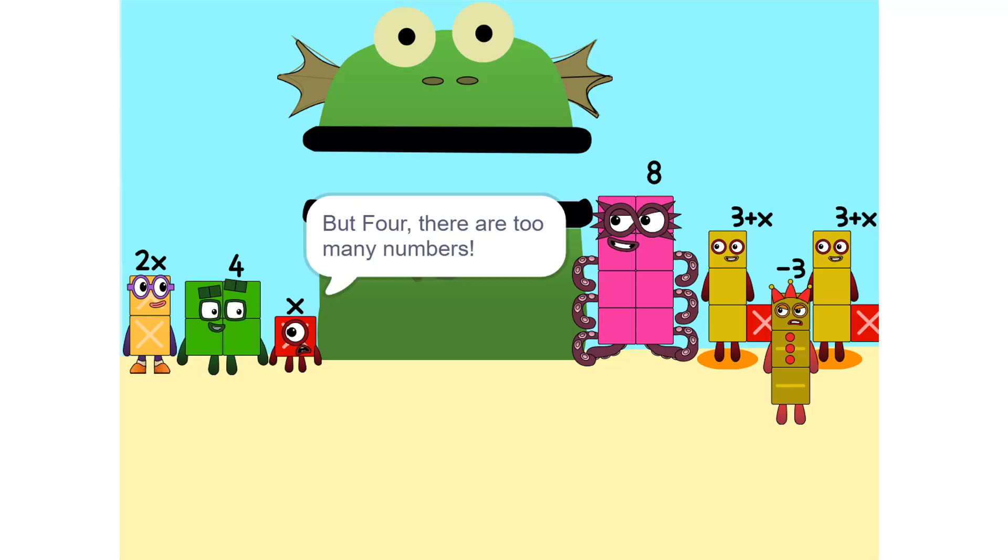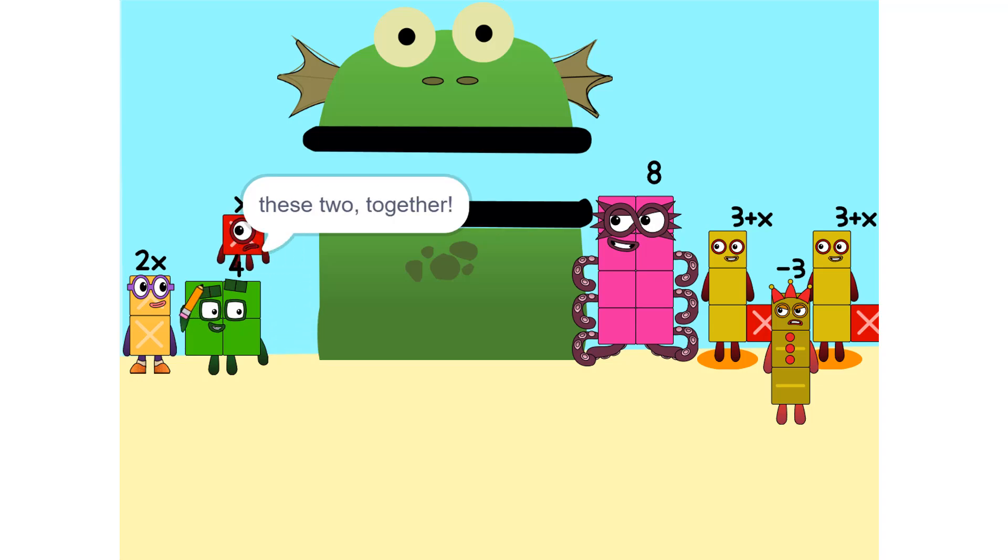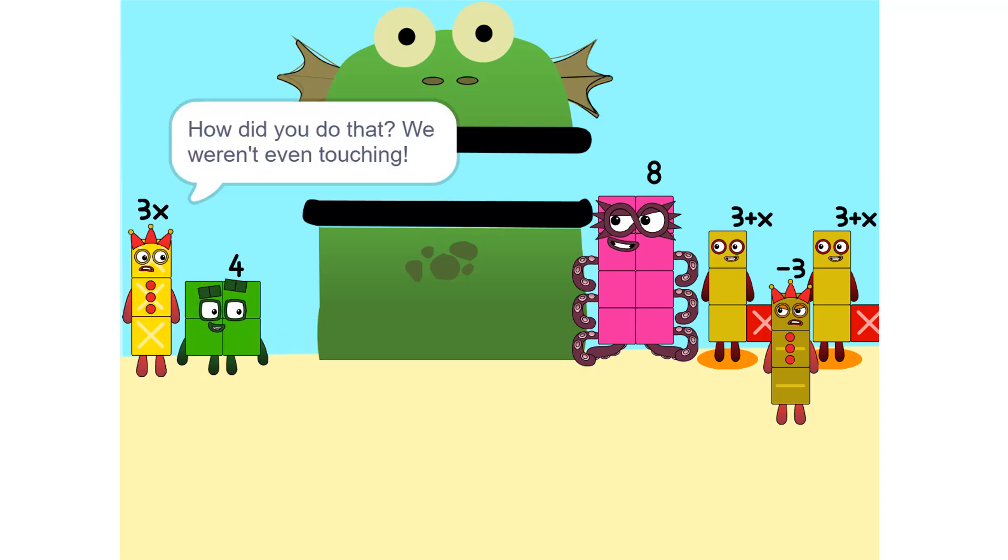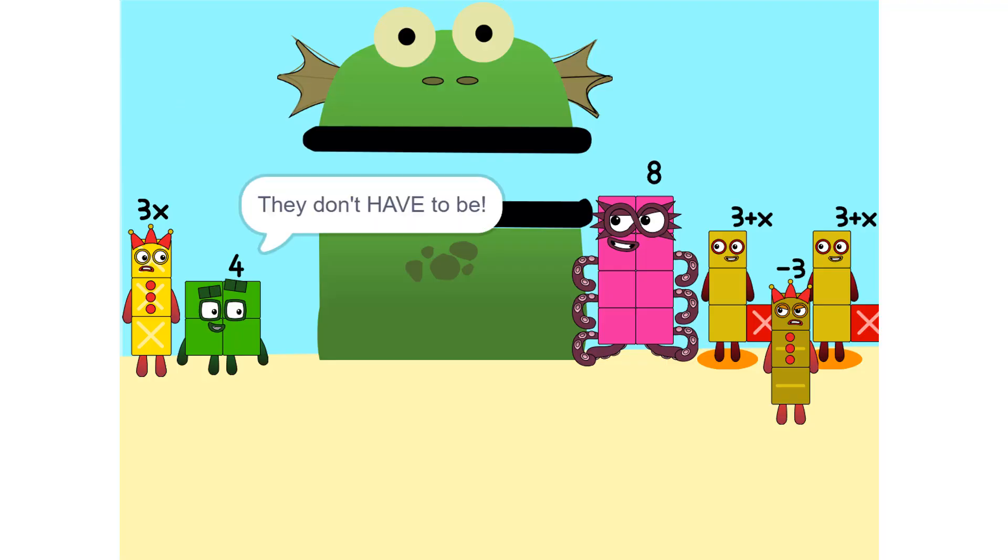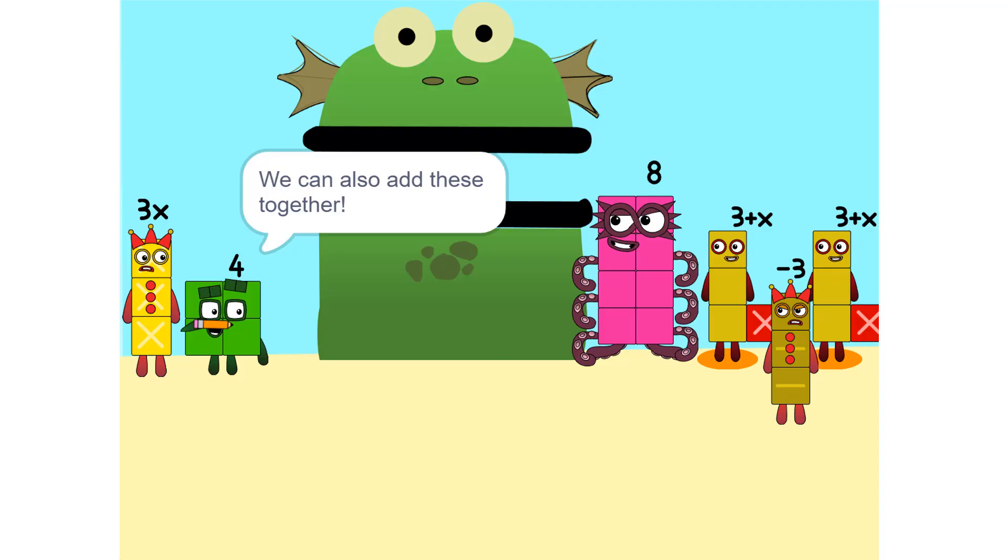But there are too many numbers. We'll never figure it out. Yeah we can, if we do it step by step and use a pencil. So let's get started. One thing we can do is add these two together. How did you do that? We weren't even touching. They don't have to be. Could we do it if we were touching? Yeah. We can also add these together.